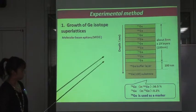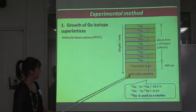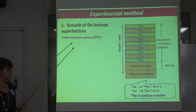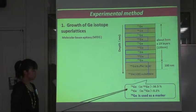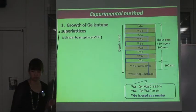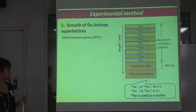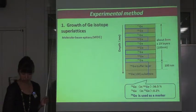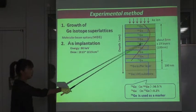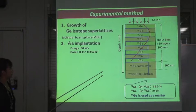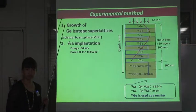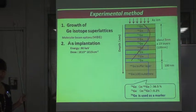We used 70Ge as a marker in the Germanium superlattices because 70Ge is included at 36.5% in natural silicon and almost 0% in very pure natural Germanium isotope sources. Arsenic ions were then implanted into the samples at an energy of 90 keV with doses from 1×10^13 to 1×10^15 per square centimeter.